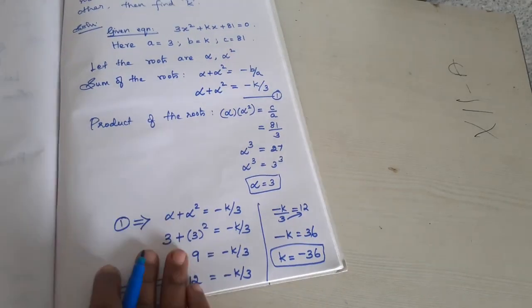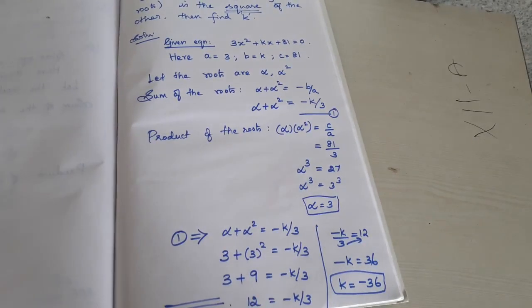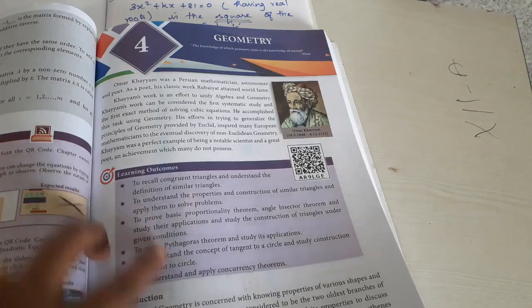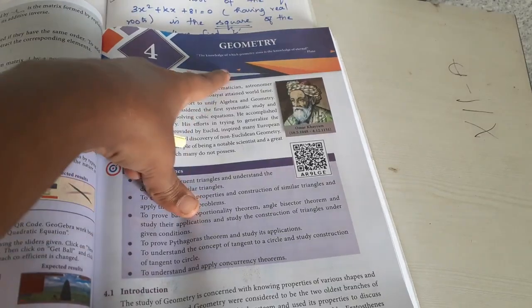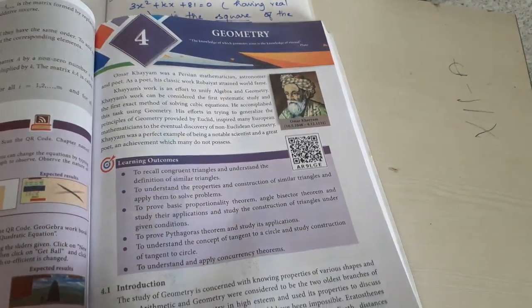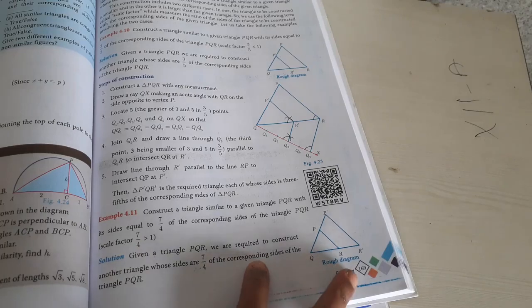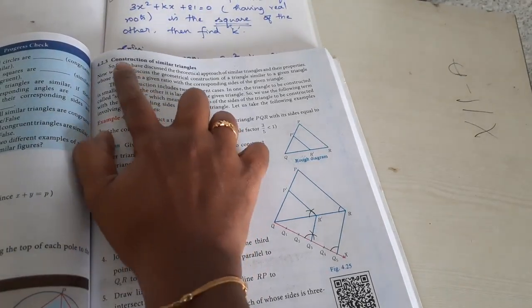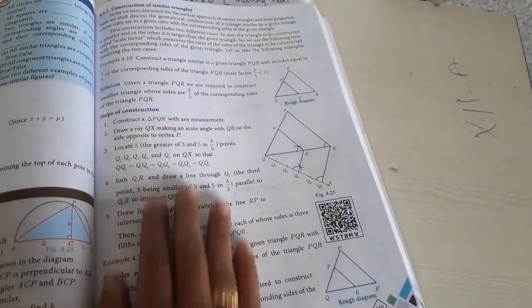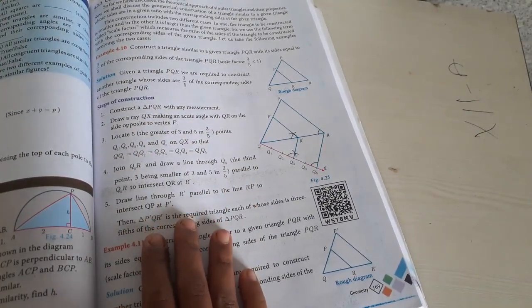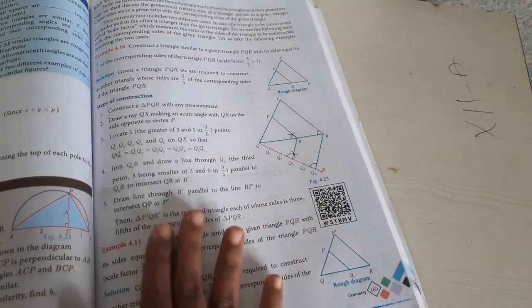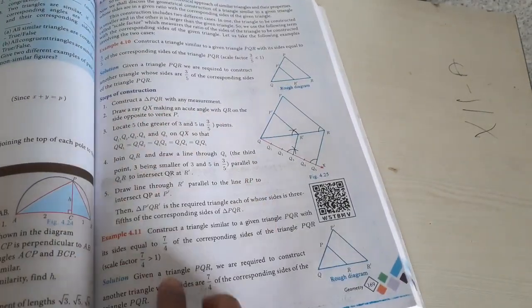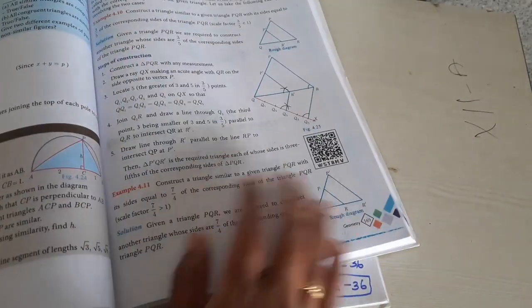That's all. Third chapter up to Exercise 3.14 is completed. Now take your textbook and turn to page number 161 — that is the fourth chapter, geometry. First, theoretical geometry is given. You need to turn to page 169 for practical geometry. There, construction of similar triangles begins. Take your practical geometry note — a 100-page long-size plain note. This is the first practical geometry for you in the fourth chapter.